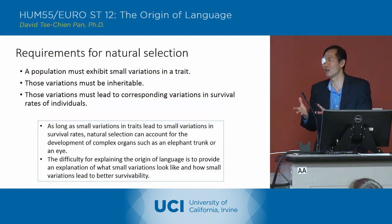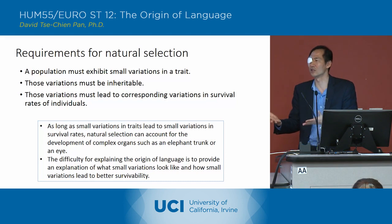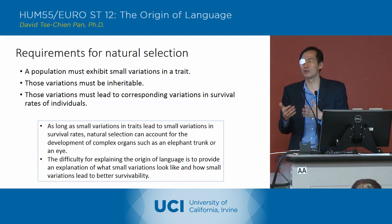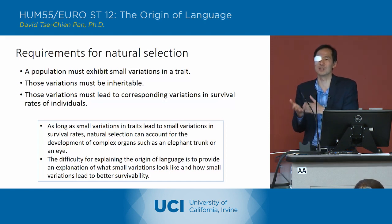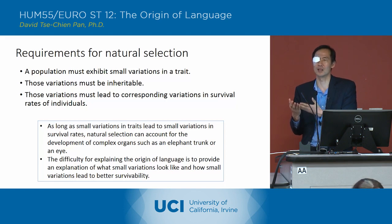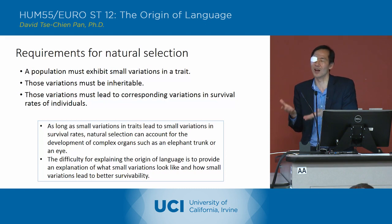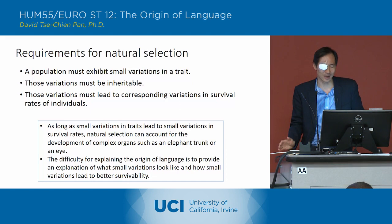If we think about the evolution of the eye, you could have small variations — the early versions of the eye could have just been a few cells that were photoreceptors. We saw that in Euglena: it was not really an eye, but it had a few cells that could detect light.